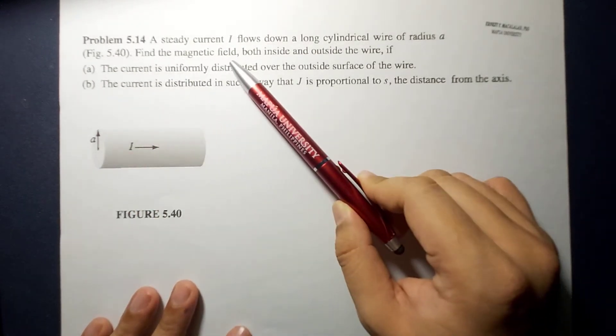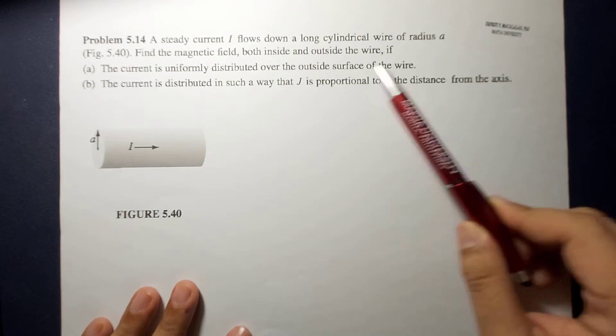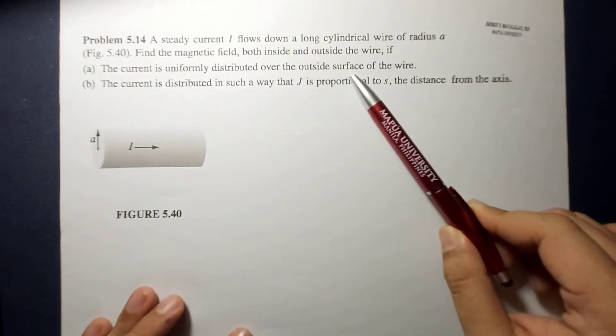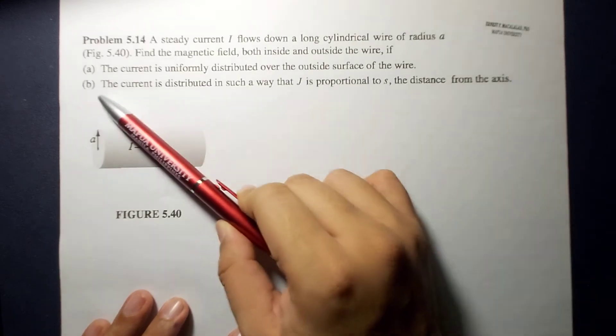as in this figure. Find the magnetic field, both inside and outside of the wire, if, letter A, the current is uniformly distributed over the outside surface of the wire, and letter B,